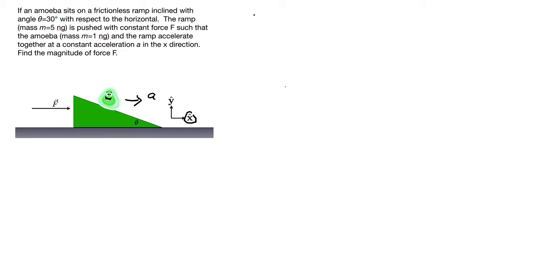The example here is an amoeba sitting on a frictionless ramp, and the ramp has an inclination. The ramp is 5 nanograms and it's pushed with a constant force, so the ramp will accelerate together at a constant acceleration a in the x direction. The trick with this problem is that there is a Newton's third law contact force and an inclined plane, so I wanted to go over both of the free body diagrams involved.